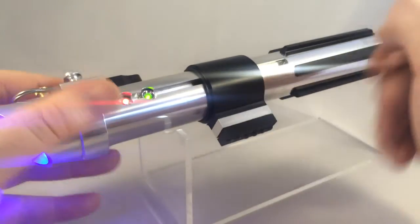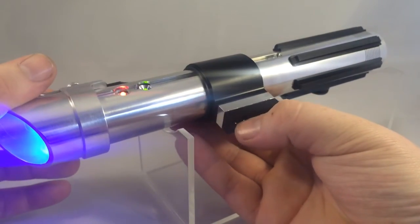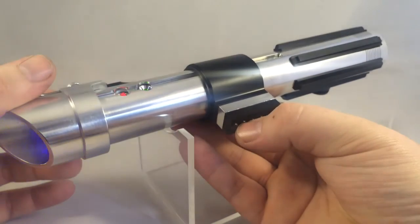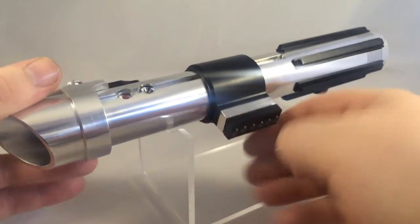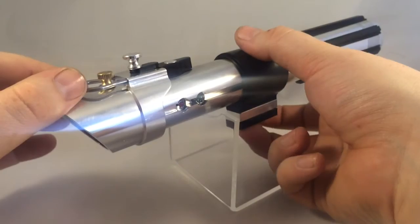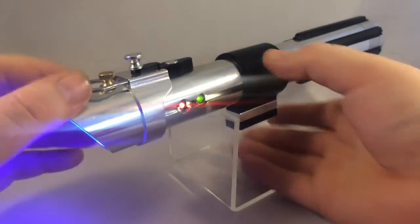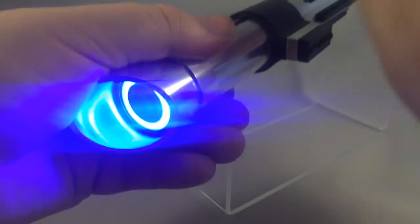And whenever you want to change fonts, because the Nano Biscotti has two sound fonts, you just hold the button down, turn the saber off, hold it down again. And that's the other sound font. So different sound right there. And blue again.